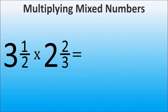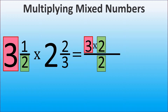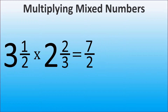Let's start with 3 and 1 over 2. We have 3 wholes and we can represent each whole as 2 over 2 because we have 2 in the denominator. Thus, we multiply 3 times 2, and then we have to add 1 to that because we initially had 1 in the numerator. 3 times 2 plus 1 is 7, so we have 7 over 2.